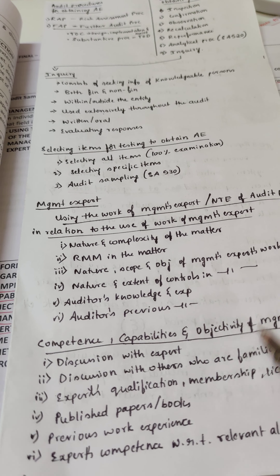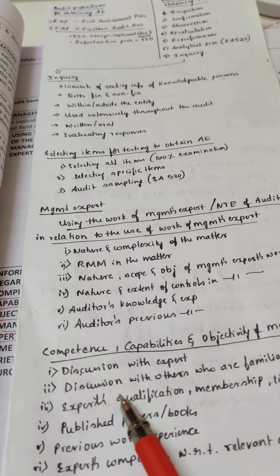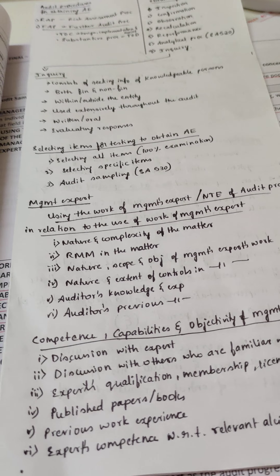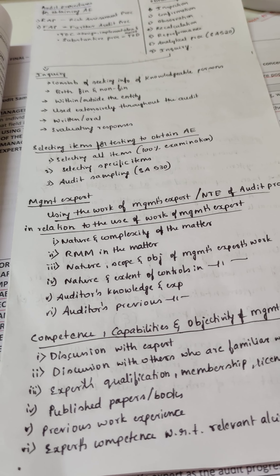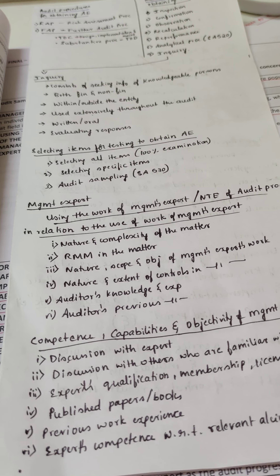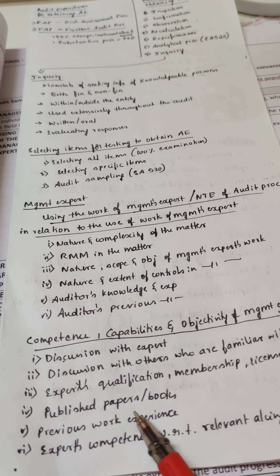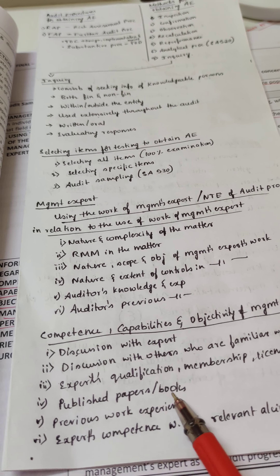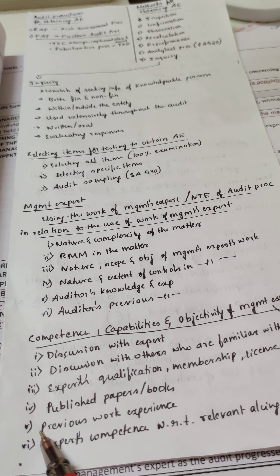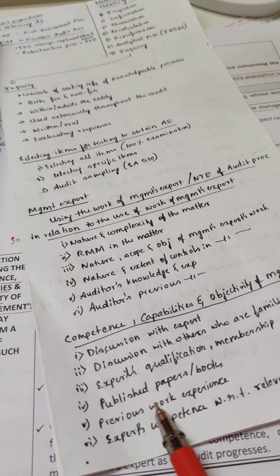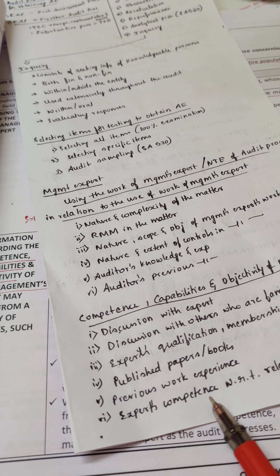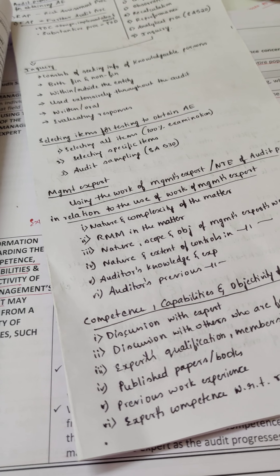Assessing the competence, capabilities, and objectivity of the management expert involves: discussion with the expert, discussion with others familiar with the expert's work, reviewing the expert's qualifications, membership, license to practice, and published papers or books, considering previous work experience with the expert, and evaluating the expert's competence with respect to relevant accounting requirements.